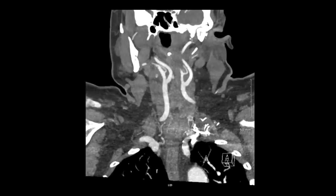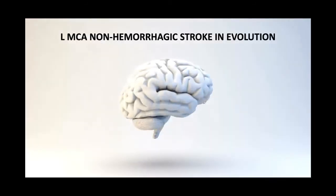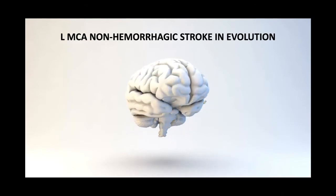On CTA, the internal carotid arteries look widely patent. On two-day follow-up, there is no hemorrhage, but the stroke that was invisible on the initial CT is now beginning to evolve — a hypodensity is now visible. This is a left MCA non-hemorrhagic stroke in evolution.